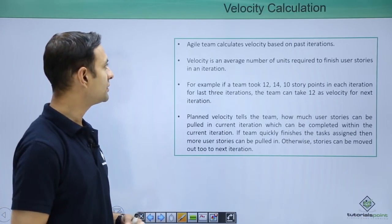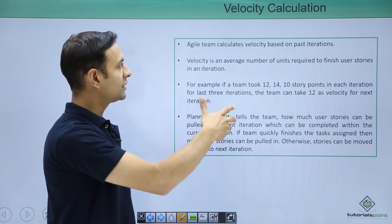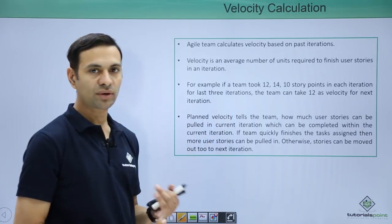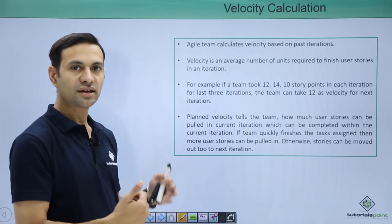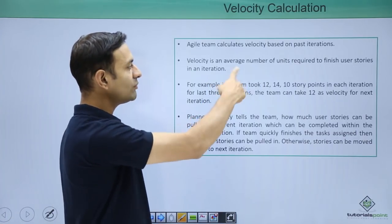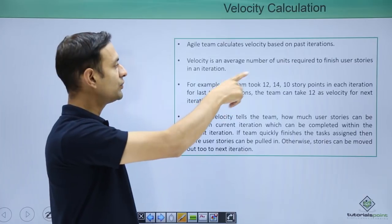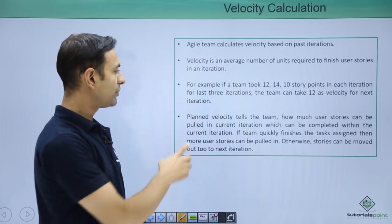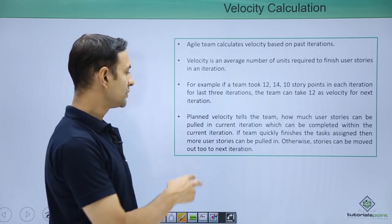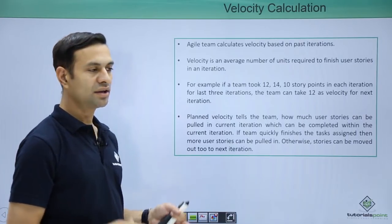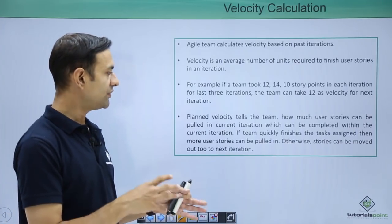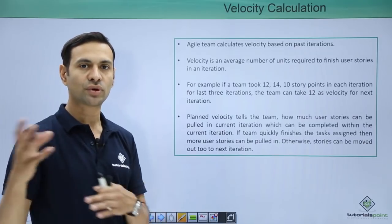Velocity calculation: a team calculates its velocity based on past iterations. For example, if a team took 12 points, 14 points, or 10 points in the last iteration, they might take 12 points in this one. Velocity is the average number of units required to finish user stories in an iteration. Planned velocity gives the team an idea of how many user stories they can pick up. If a team member quickly finishes stories, more can be pulled in; otherwise, stories can be moved to the next iteration.